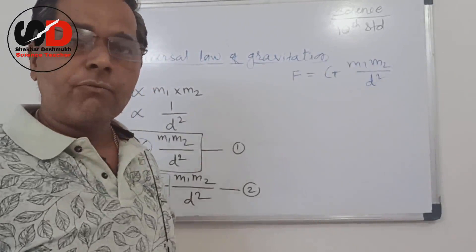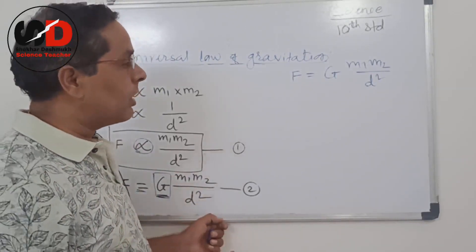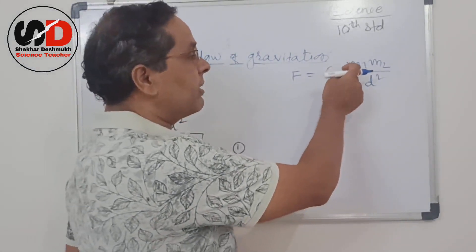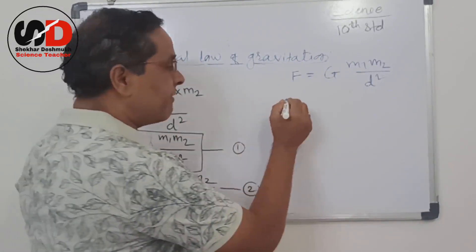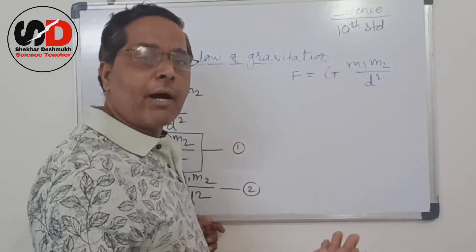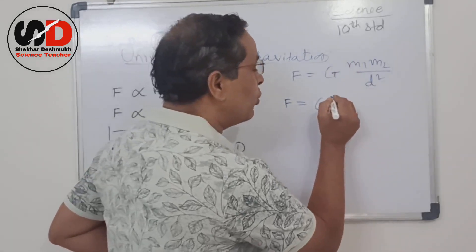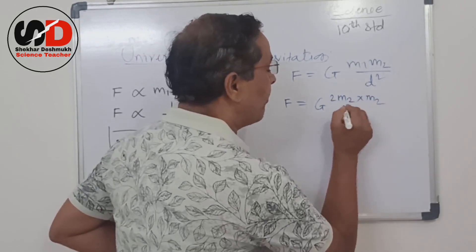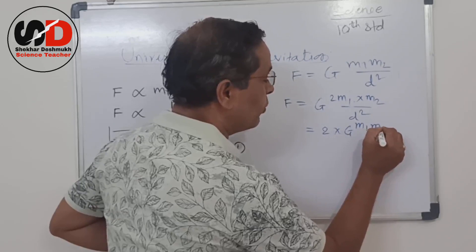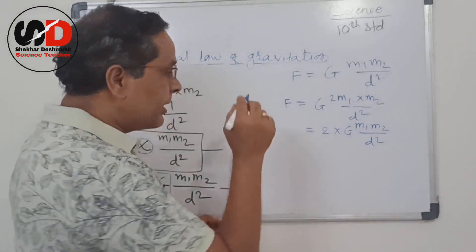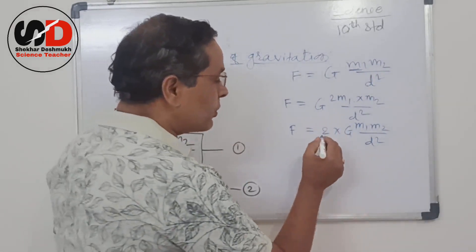From this equation, if we double the mass of one of the objects — say we replace M1 with 2M1 — then F = G × 2M1 × M2 / D² = 2 × (GM1M2/D²). So if we double the mass of any one object, the gravitational force also doubles.